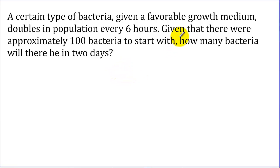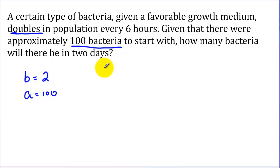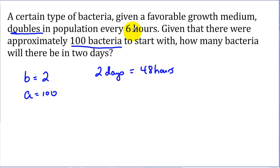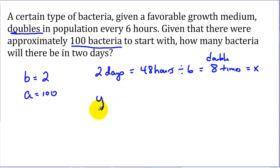Here's our first example. We've got bacteria growing in a petri dish that doubles every six hours, so the b value will be 2. We start with 100 bacteria initially, so a is 100. Two days is the same as 48 hours. Dividing by 6 gives us 8 doublings, so x equals 8. To calculate the answer, y equals 100 times 2 to the eighth power.